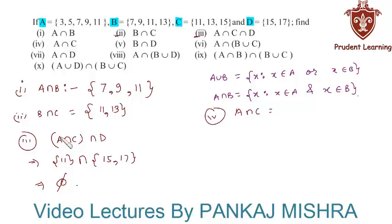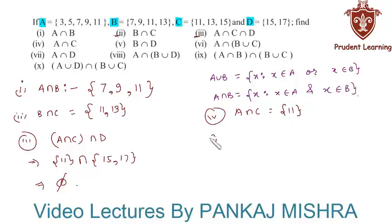In the fourth section we have A intersection C. We have already determined its value in the third section — A intersection C is a set containing element 11, so A intersection C = {11}.